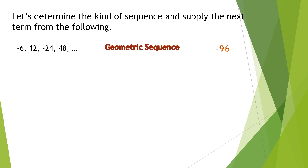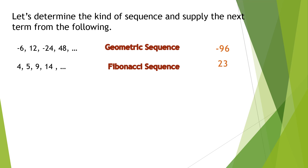Number 2: 4, 5, 9, 14. Is it arithmetic, geometric, harmonic, or Fibonacci? The correct answer is a Fibonacci sequence because the progression is made by adding the previous two terms: 4 plus 5 gives 9, and 5 plus 9 gives 14. Therefore, the next number after 14 is 23 because 9 plus 14 is 23.